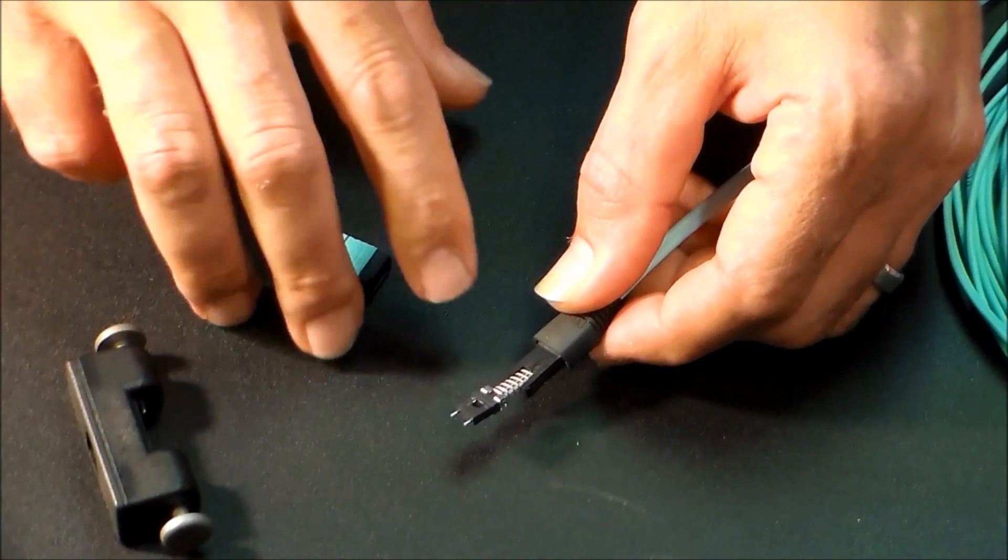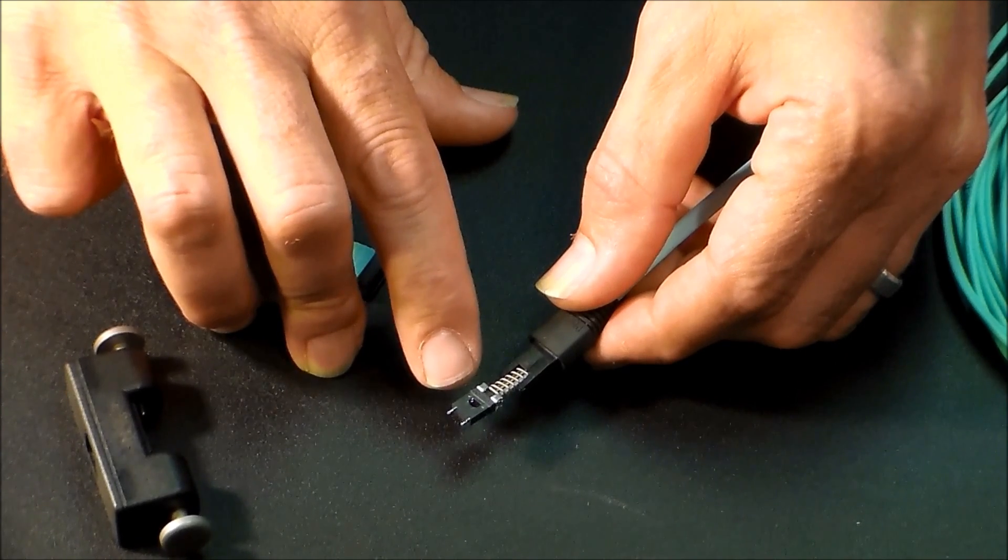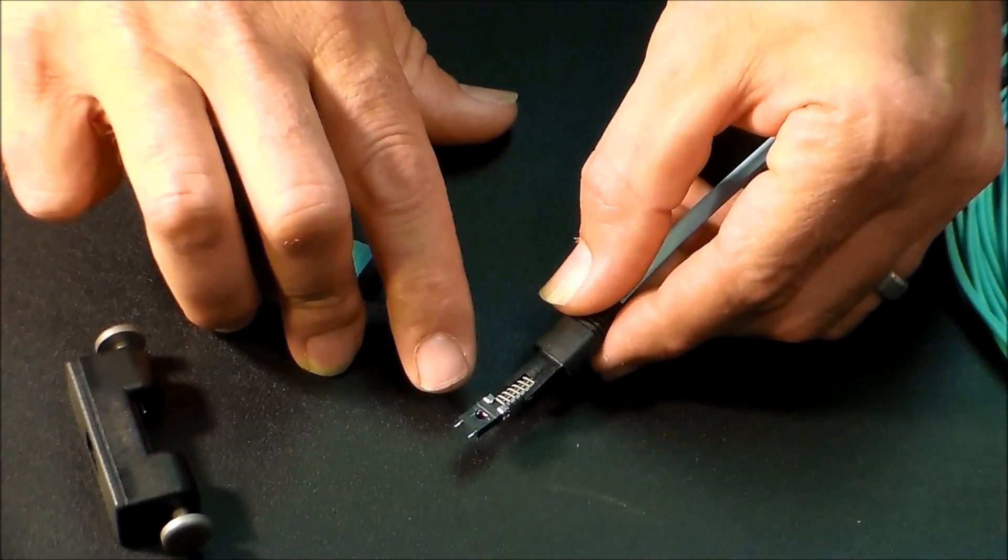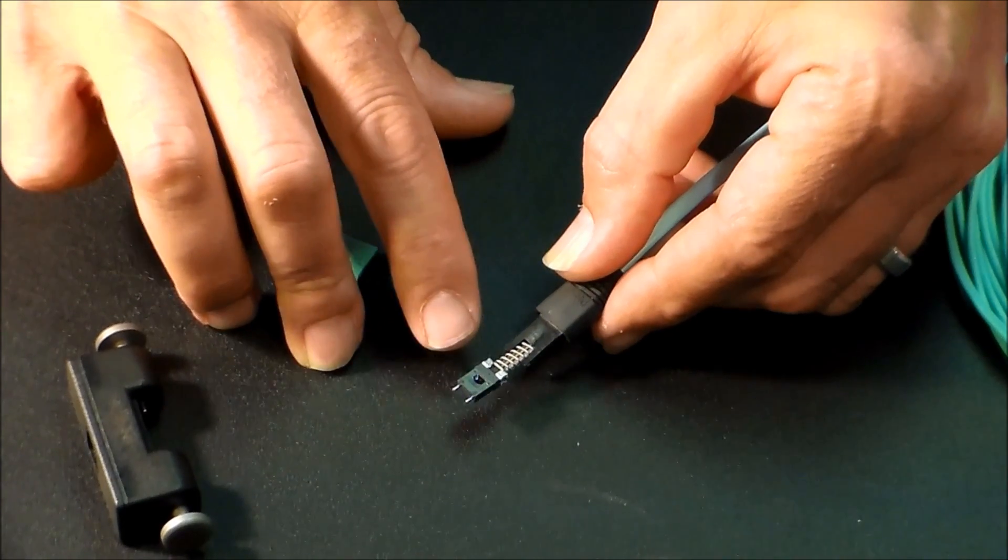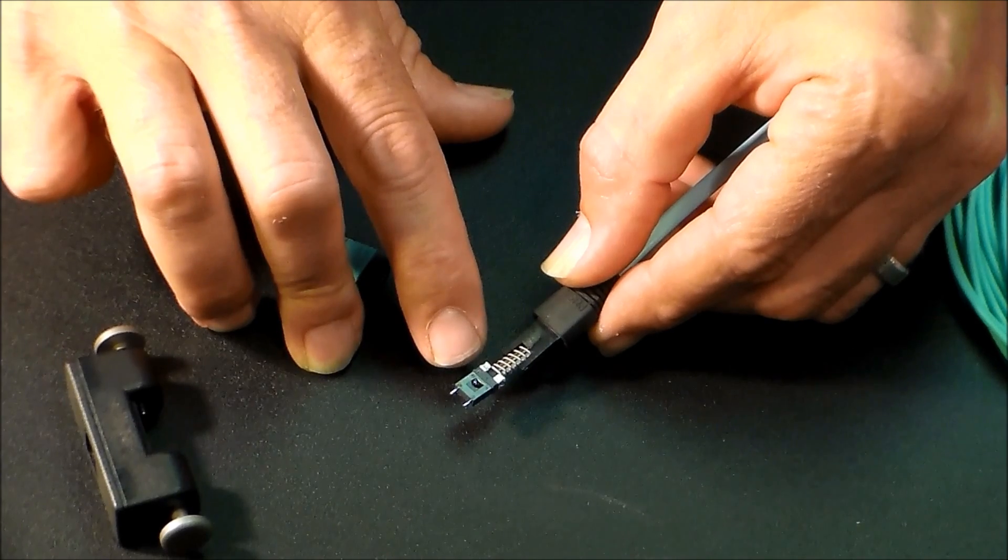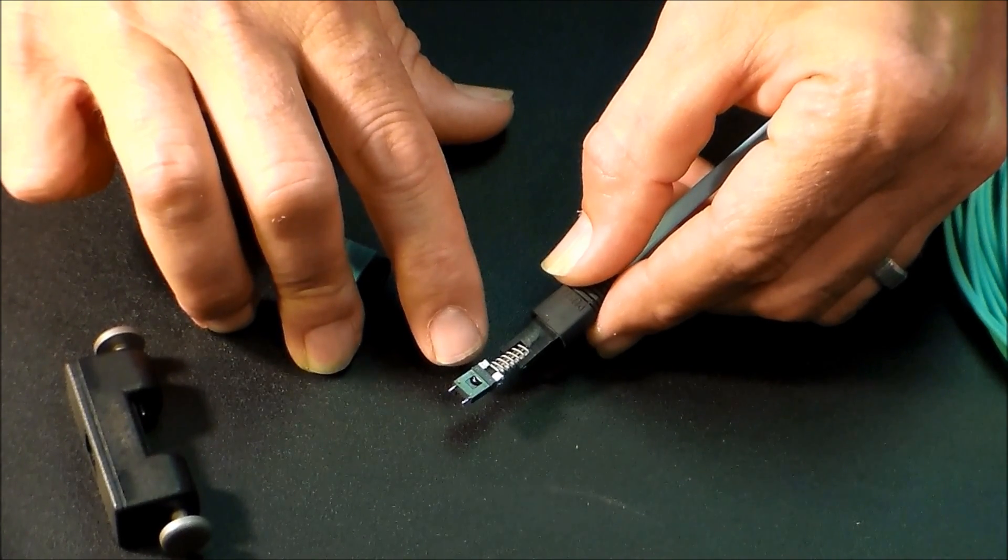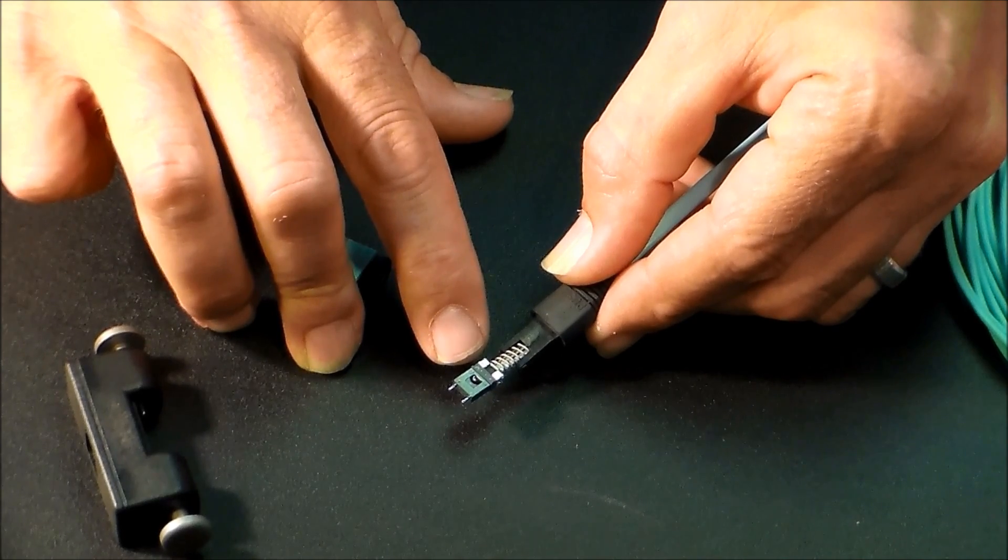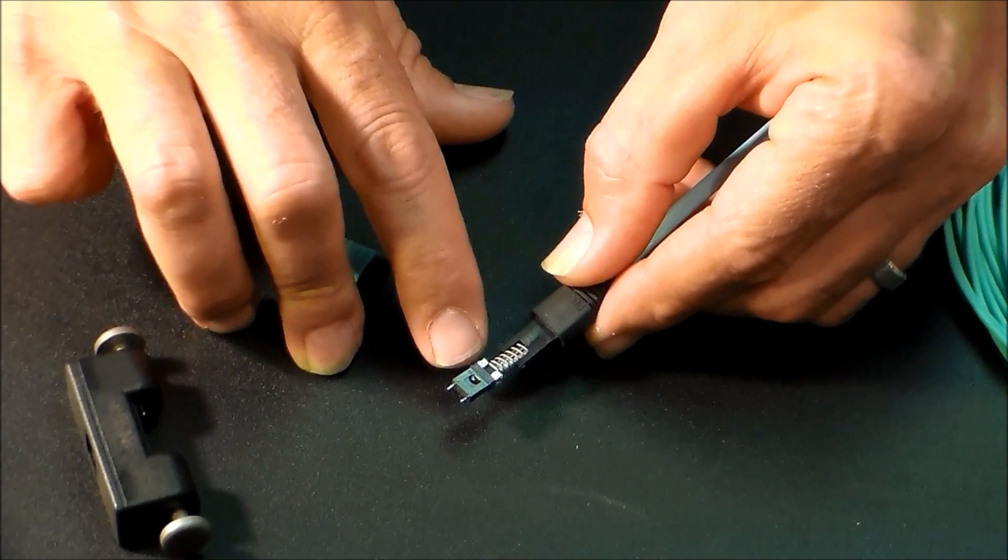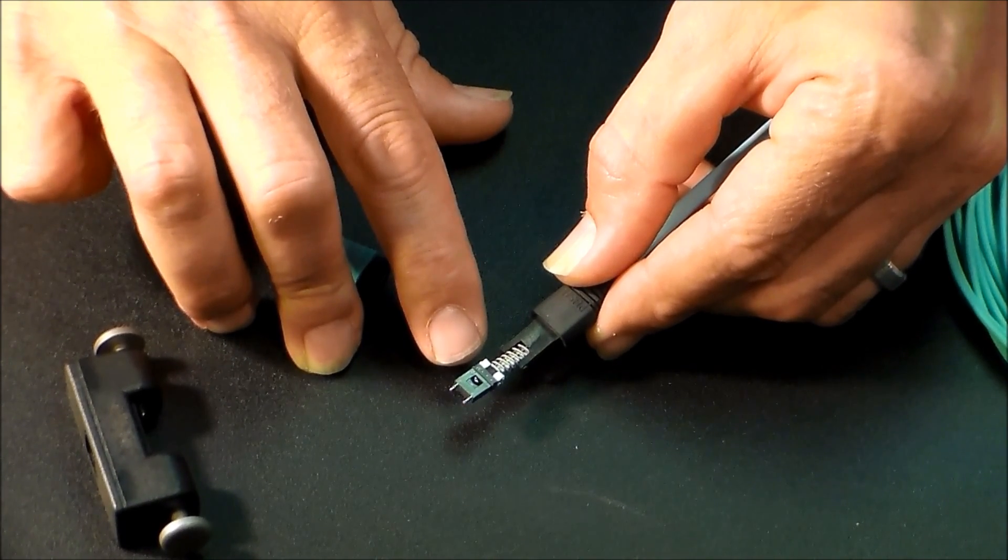Now, on the MTP ferrule itself, we have a window. On the window side, on a U.S. Connect MTP connector, it'll have a letter, and that letter tells you what type of ferrule it is. This particular one being an OM3 cable, that letter is an M, indicating it's a multimode standard ferrule. If it was an S, that would be single mode. If it was an E, that would be an elite single mode.